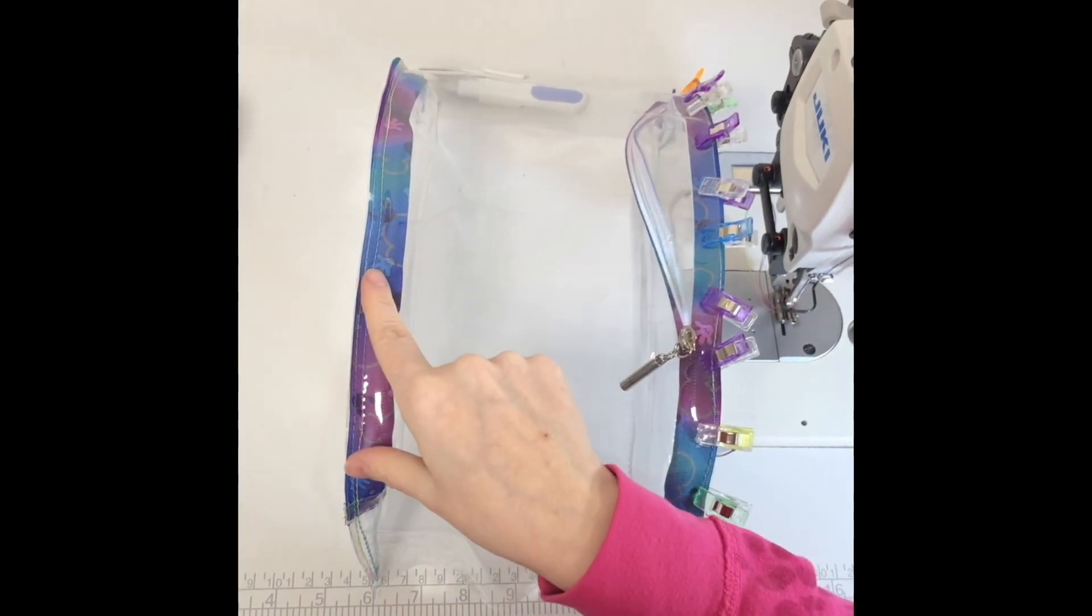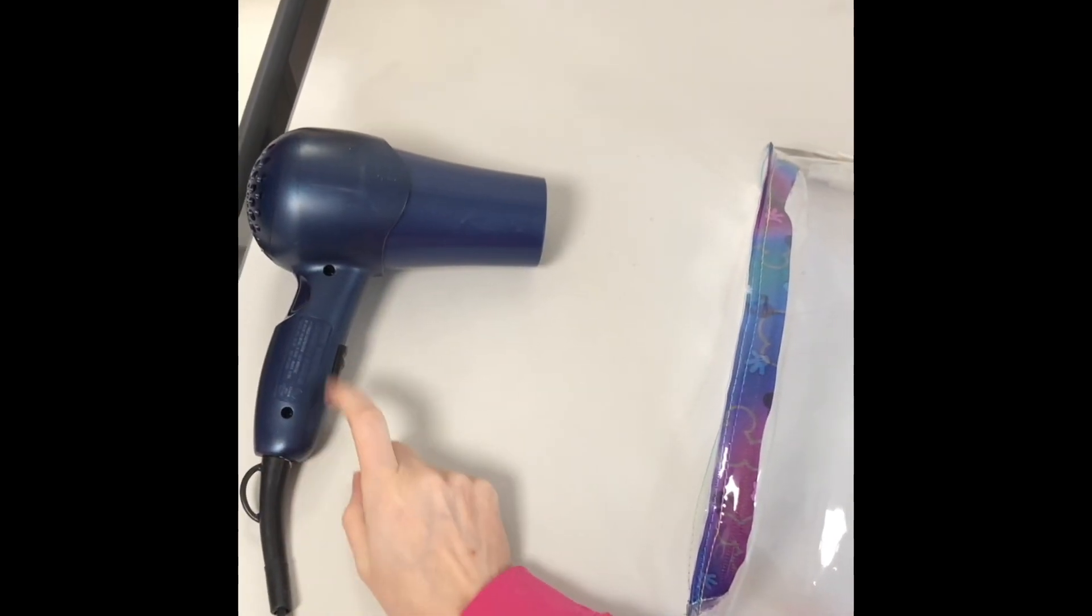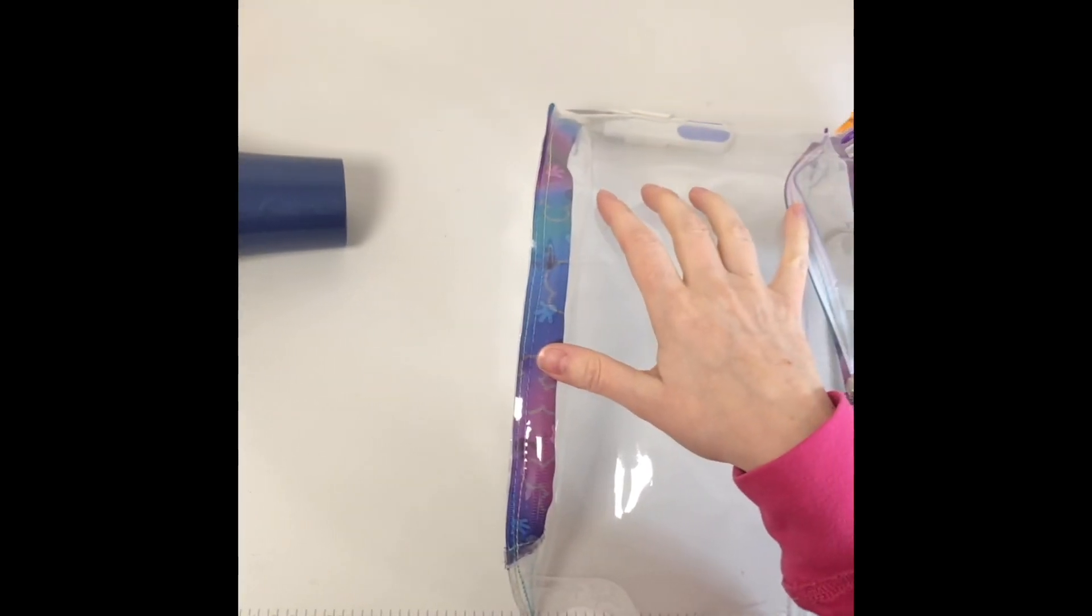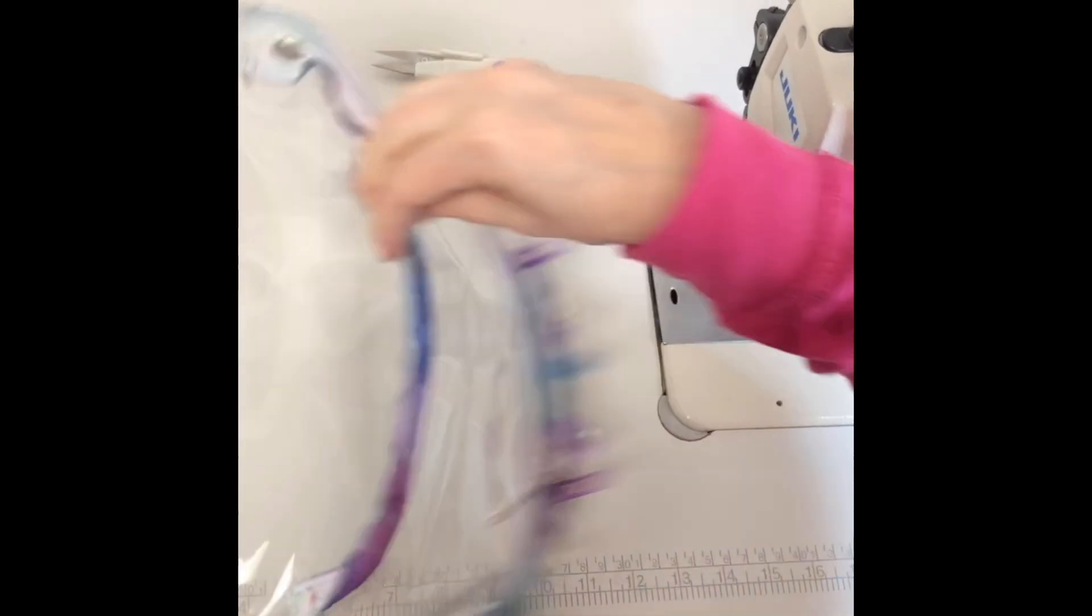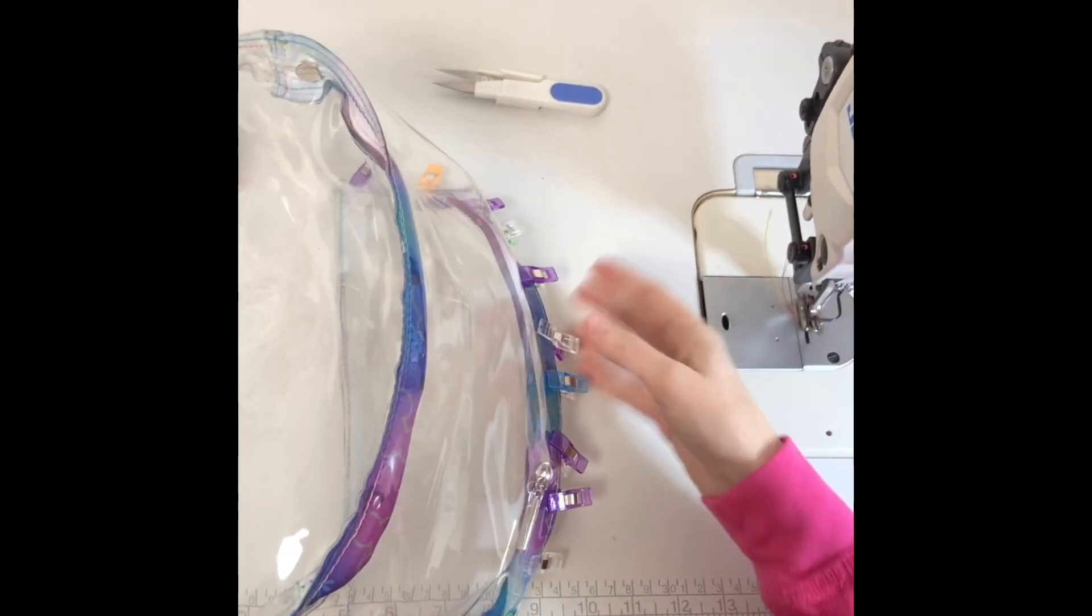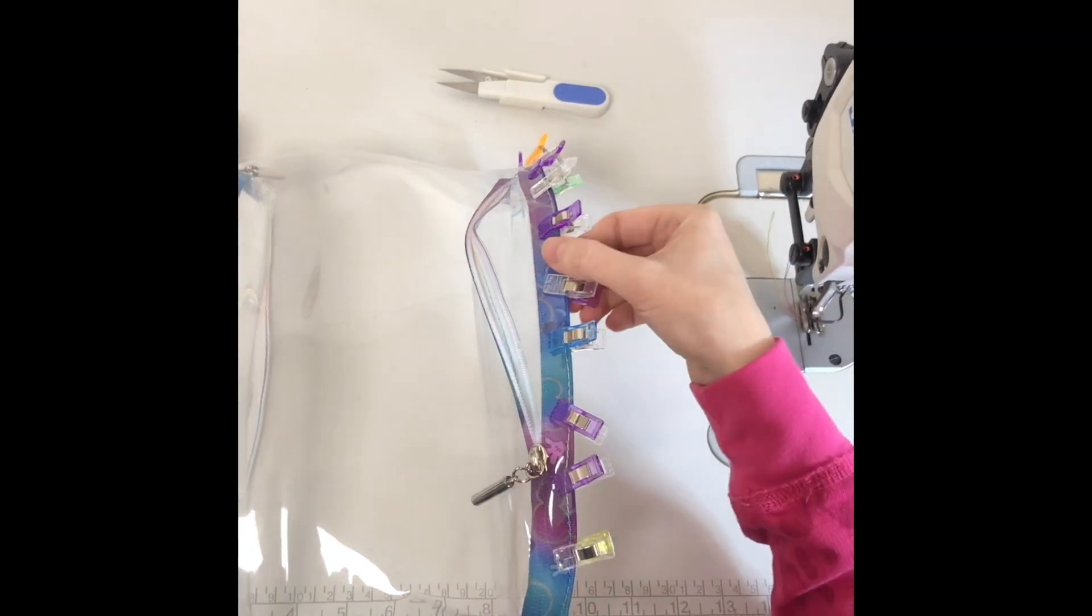So what you didn't see for this first side is I have my blow dryer laying down here and I'm going to turn it on so that it keeps the vinyl soft. Because when I go to sew this with the pockets already on, it's so stiff it fights me, all the clips want to pop off, the vinyl wants to move, it is very frustrating.